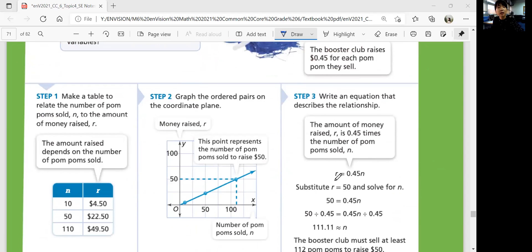Let's make a table to relay the number of pom-poms, which is N. The number of pom-poms sold is N. The amount of money raised, R. The independent variable is the X value. The amount of money raised would be the dependent variable, which is on your Y axis. The amount raised depends on the number of pom-poms sold. We can graph the ordered pairs 10, 4.5, 50, 22.5, 110, 49.5. And let's draw a straight line through those points.